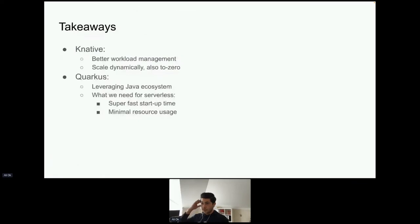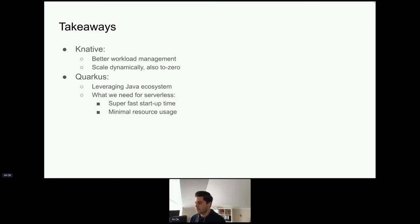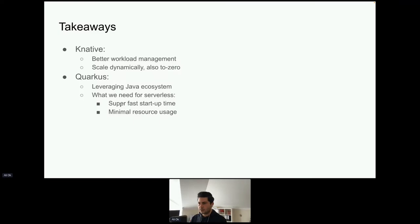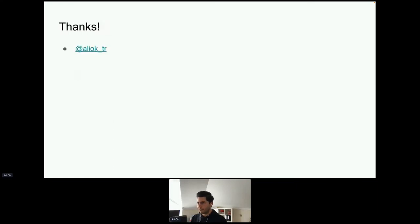The takeaways: Knative provides better workload management on top of Kubernetes — it allows workloads to scale dynamically, including to zero, and supports advanced networking things like traffic splitting. Quarkus makes a lot of sense in a Knative context because of its super fast startup time, minimal resource usage, and because you just leverage your existing Java ecosystem knowledge. That's all for my talk.